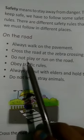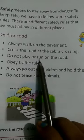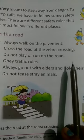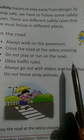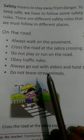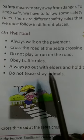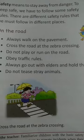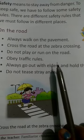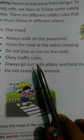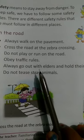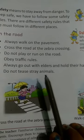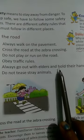Next safety rule: do not play or run on the road. If you play or run on the road, then an accident can happen. So we must follow these rules. Obey traffic rules — there are some traffic rules given, and we must obey them. I will tell you about traffic rules in the next topic. Always go out with elders and hold their hands. Never go alone.